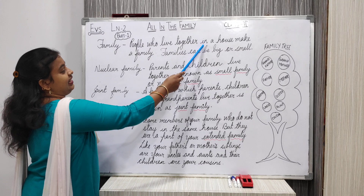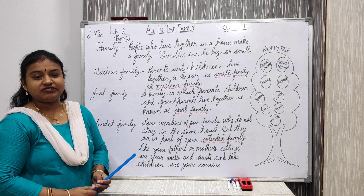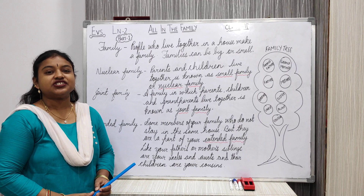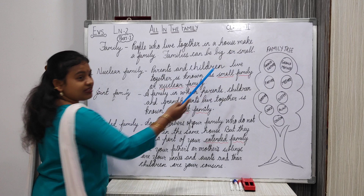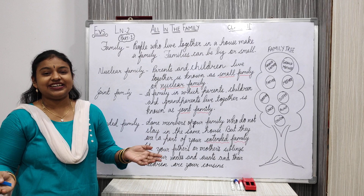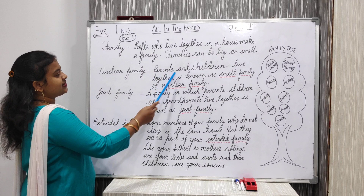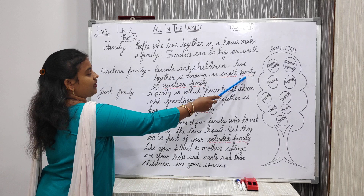Yes or no, children? You are staying in your house now, with your parents, with your grandparents — together you are staying. That is known as family. Families can be big or small. Big means it is a joint family. Now, parents and children live together is known as small family or nuclear family.